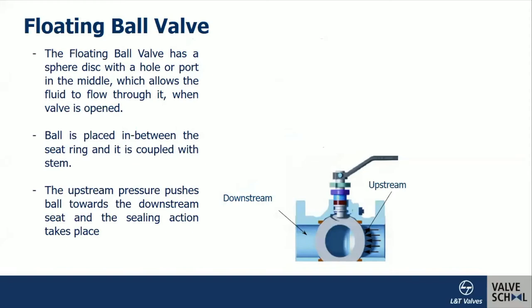As the name implies, in a floating ball valve the ball — which is the closure member or obturator — is not rigidly held on its rotational axis. It is allowed to float between the upstream and downstream seats. The upstream pressure always pushes the ball towards the downstream seat, and effective sealing takes place.